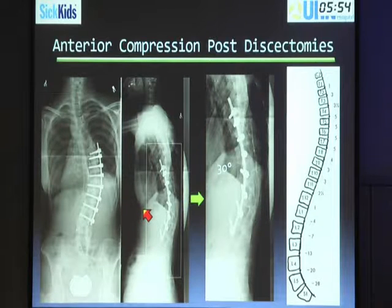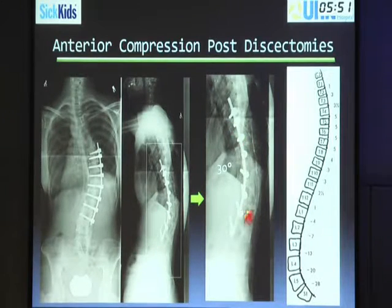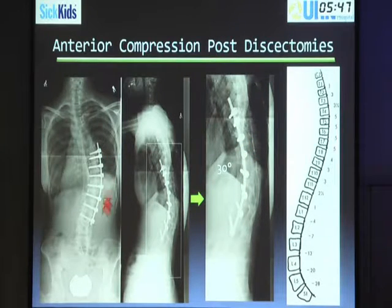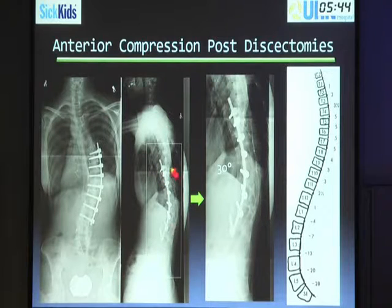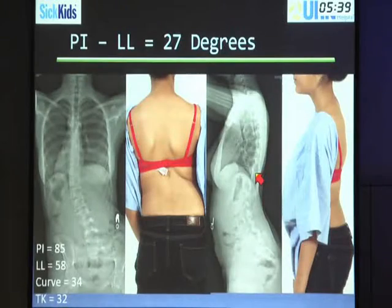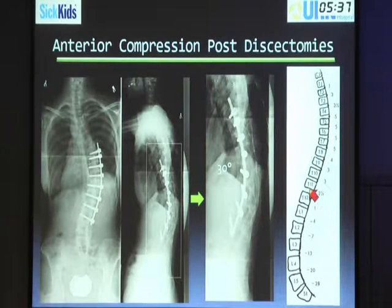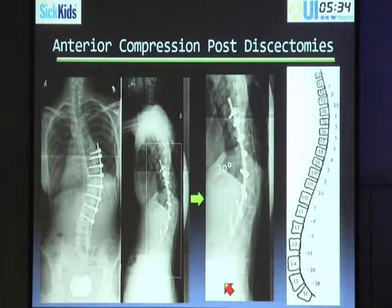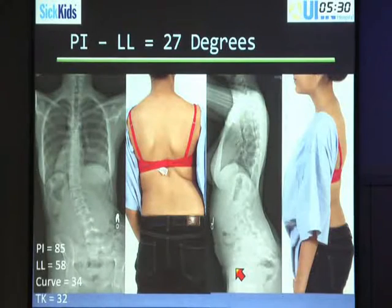In many cases, anterior approaches are used, but when the discs are taken out and anterior compression is performed, anterior compression creates anterior kyphosis. This kyphosis is very different — we've created 30 degrees of kyphosis over an area that should be pretty neutral, and the patient compensates mainly through pelvic tilt, which she was not happy about.